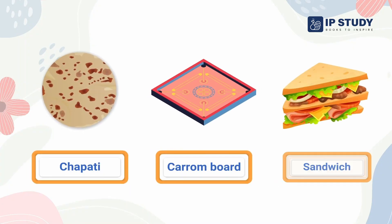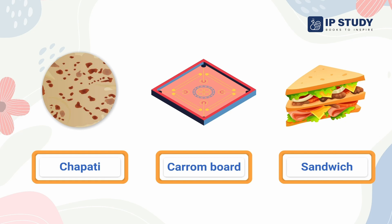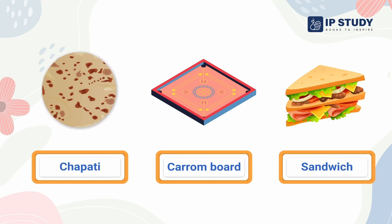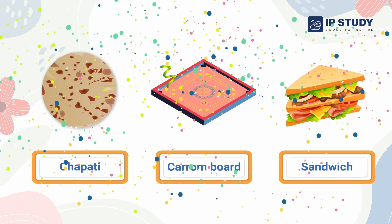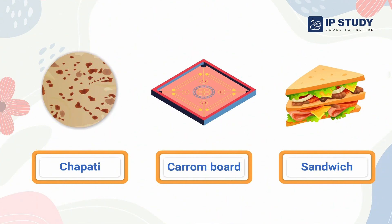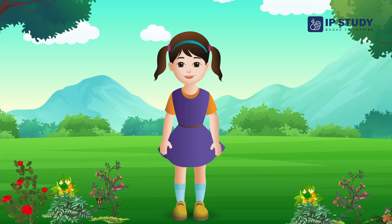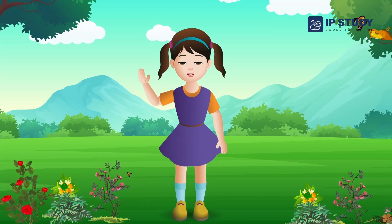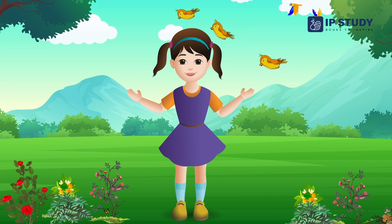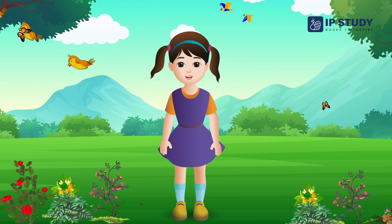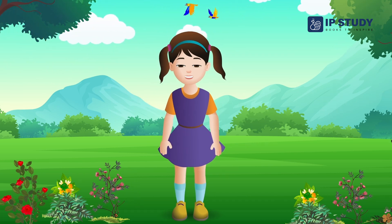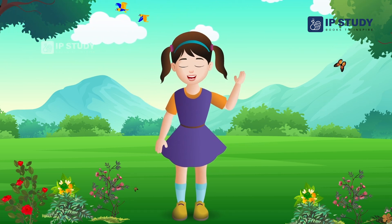Now can you tell me which of these shapes is a circle — a chapati, a carom board, or a sandwich? That's right, the left side shape is a circle. Objects can also be compared using their shapes. We will learn about this when we meet again — till then, bye!